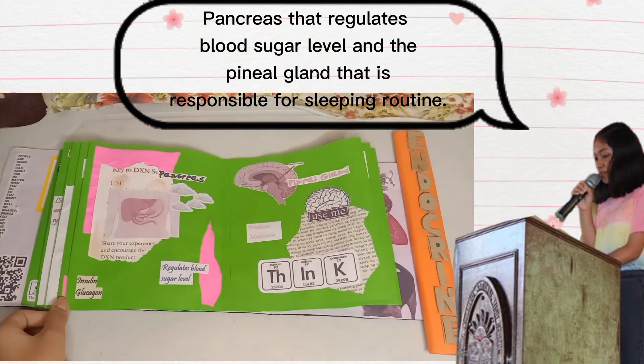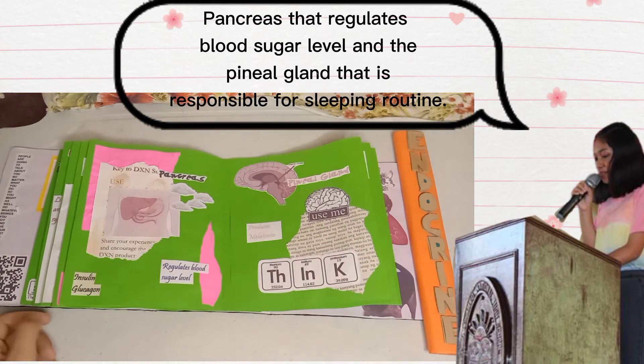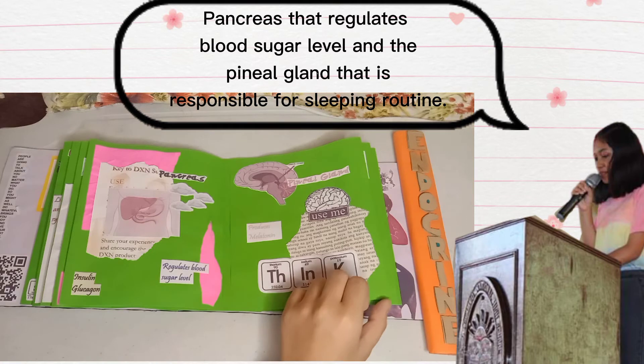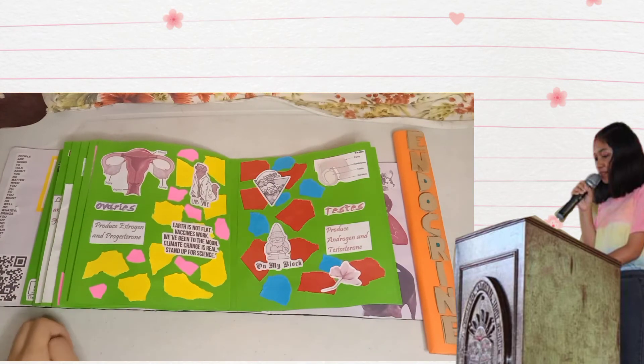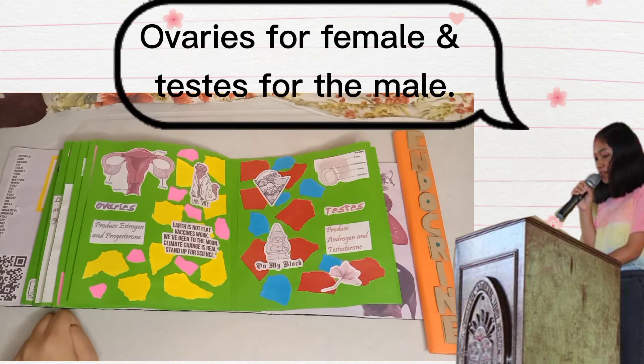The pancreas regulates blood sugar level, and the pineal gland is responsible for sleeping routine. Ovaries for the female and testes for the male.